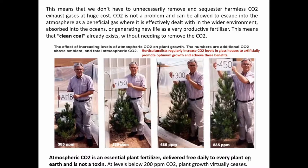This means that clean coal already exists without needing to remove the carbon dioxide. The effect of increasing levels of atmospheric CO2 on plant growth is illustrated in these photographs, showing additional carbon dioxide above ambient levels of 385 ppm. Horticulturalists regularly increase CO2 levels in glasshouses to artificially promote optimum growth and achieve these benefits. Atmospheric CO2 is an essential plant fertiliser delivered free daily to every plant on earth and is not a toxin. At levels below 200 ppm carbon dioxide, plant growth virtually ceases.